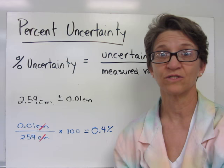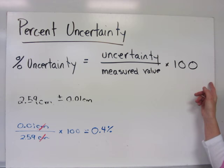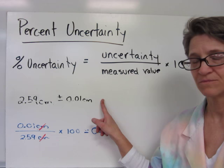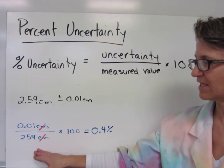Another calculation we can make with uncertainty is something called percent uncertainty, which is just your uncertainty divided by the measured value times 100. So if we use the example 2.54 centimeters with an uncertainty of 0.01 centimeters, we can calculate its percent uncertainty.